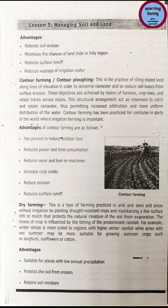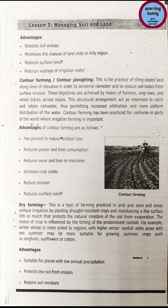Method 3 — Dry farming: a type of farming practiced in arid and semi-arid areas without irrigation, by planting drought-resistant crops and maintaining a fine surface tilth or mulch that protects the natural moisture of the soil from evaporation. The choice of crop is influenced by the timing of predominant rainfall; for example, winter wheat suits regions with higher winter rainfall, while areas with wet summers may be suitable for summer crops such as sorghum, sunflowers or cotton. Advantages: suitable for places with low annual precipitation, protects soil from erosion and retains soil moisture.